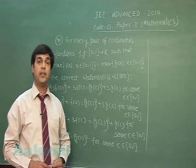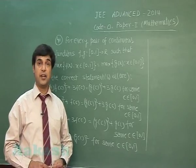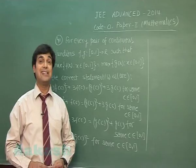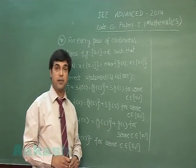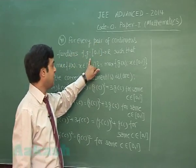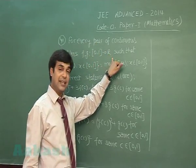Hello students, today we are going to solve JEE Advanced 2014 Paper-I of Mathematics, Code 0. Let's start with question number 41: For every pair of continuous functions f and g from [0,1] to the set of real